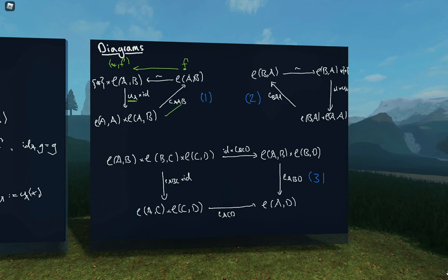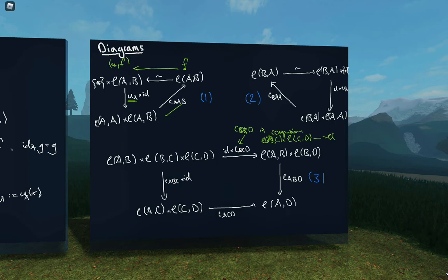We can do the same thing with the associativity axiom on the category, expressing it using a diagram, where C_{AB} and C_{BCD} denote composition viewed as a function. What we're asserting is that this diagram commutes — that going around the right arm is the same as going around the left arm. Are there any questions about translating that definition of categories into these diagrams?